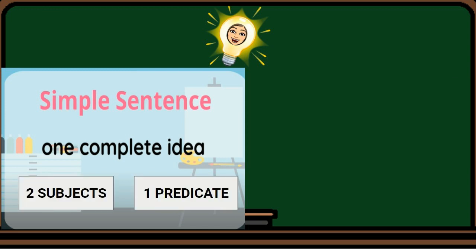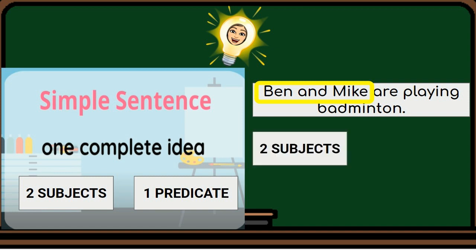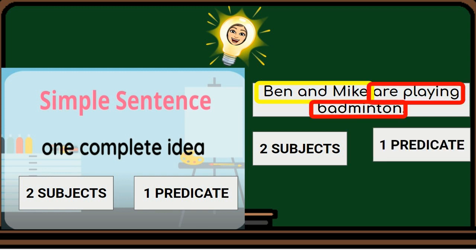A simple sentence can also have two subjects and one predicate. For example, Ben and Mike are the two subjects, while are playing badminton is the one predicate.